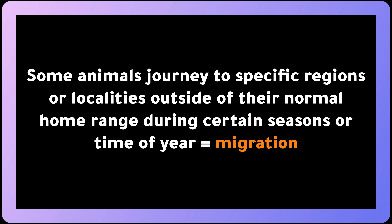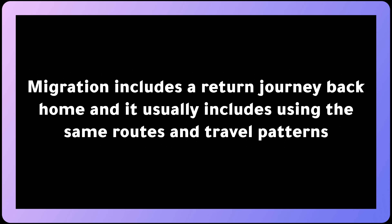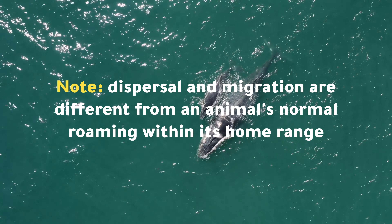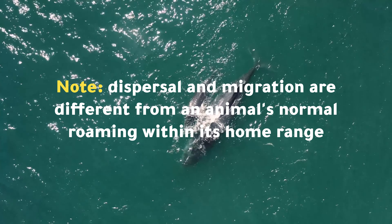Some animals journey to specific regions or localities outside of their normal home range during certain seasons or time of year. This movement is called migration. Migration includes a return journey back home, and it usually includes using the same routes and travel patterns. Migration is usually repeated throughout the animal's life cycle. Dispersal and migration are different from an animal's normal roaming within its home range.